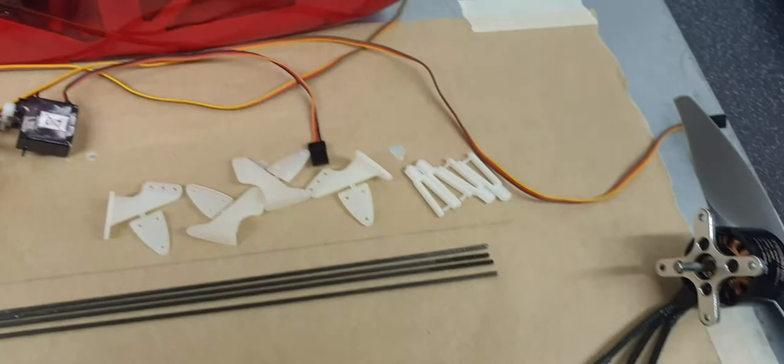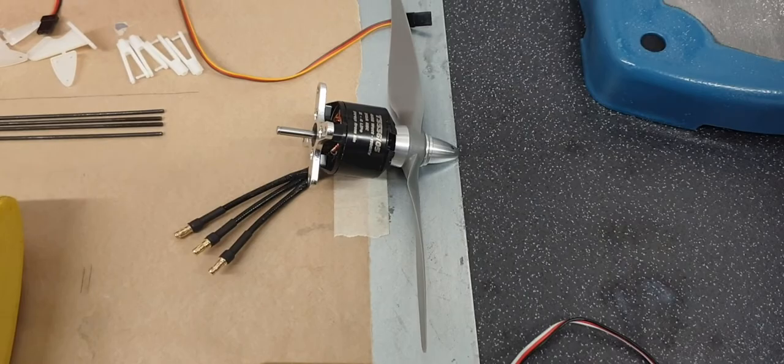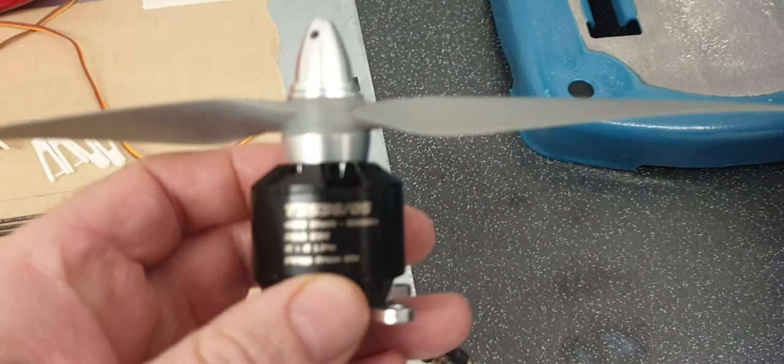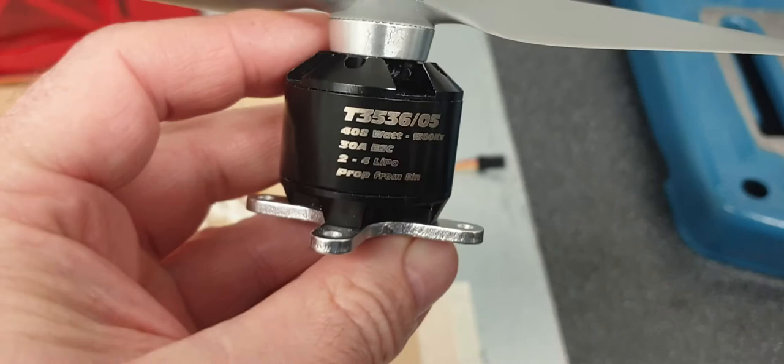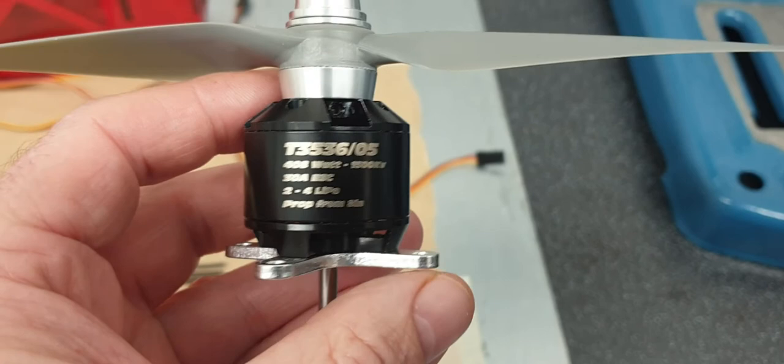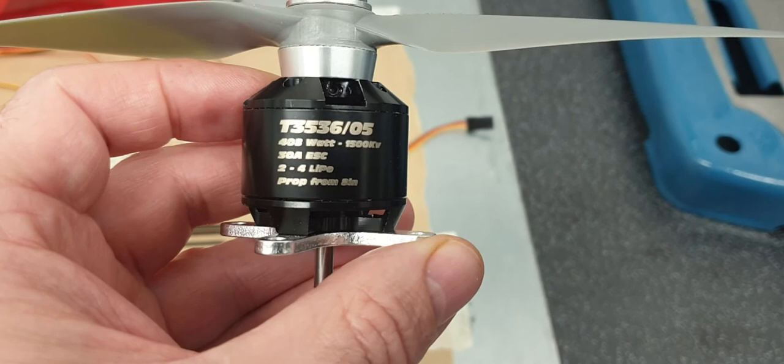So moving on to the motor, this is a motor that I've had in my box for quite a while, and this is the one I'm going to be using. If I can focus in on that, it's an Overlander Thumper. To be honest, I don't really know a great deal about electric motors, but this one is capable of 408 watts. So it should be plenty powerful enough for this model. I think the actual instructions recommend 400 watts, so we're bang on the money with that.